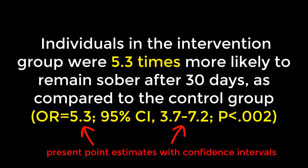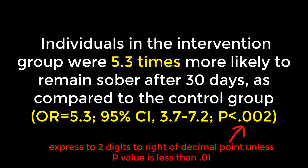For example, a better way to present these results might be to say that individuals in the intervention group were 5.3 times more likely to remain sober after 30 days, as compared to the control group. The 5.3 is listed as an odds ratio, with 3.7 to 7.2 as the 95% confidence interval. Also keep in mind that at JPHMP we use the American Medical Association Manual of Style. Statistical significance, meaning p-values, should be expressed to two digits to the right of the decimal point, unless the p-value is less than .01, in which case it should be expressed to three digits to the right of the decimal point.